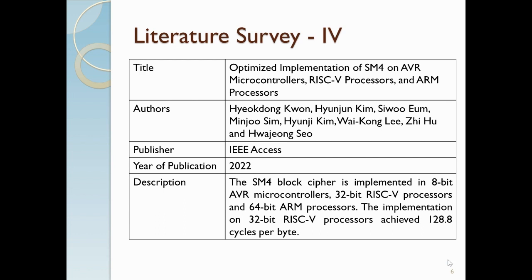The next paper is on the optimized implementation of a RISC-V microcontroller. In this paper, a 64-bit ARM processor and 32-bit RISC-V processor are measured and they achieved 128.8 cycles per instruction.